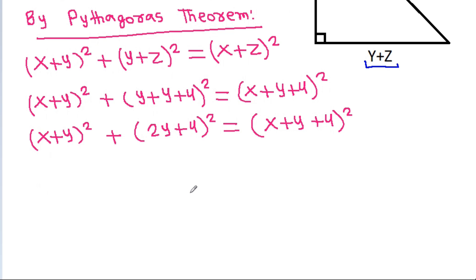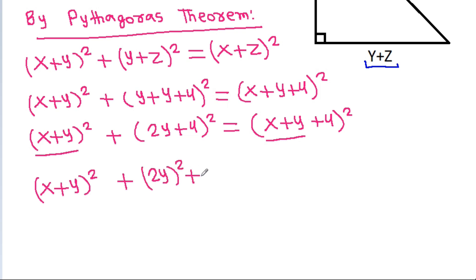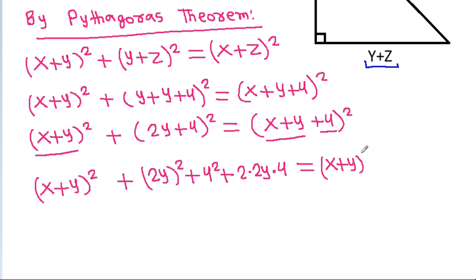Now, here we have x plus y on both sides. Taking x plus y as one term and 4 as the second term, the right side expands as (x plus y) squared plus 4 squared plus 2 times (x plus y) times 4.